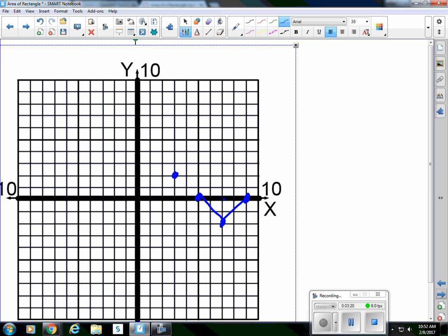A slope of negative one, but perpendicular to that, the slope is positive one. And so here's my rectangle.